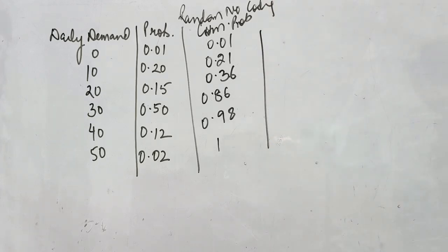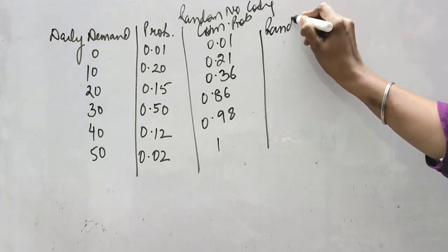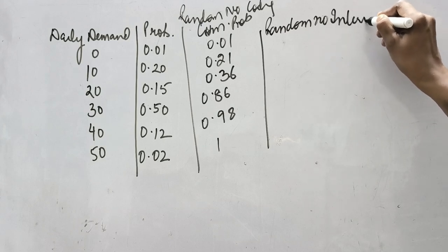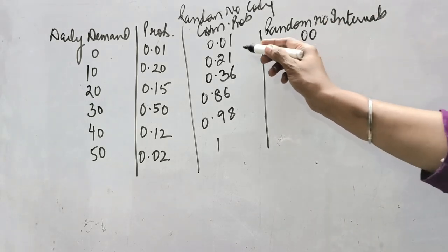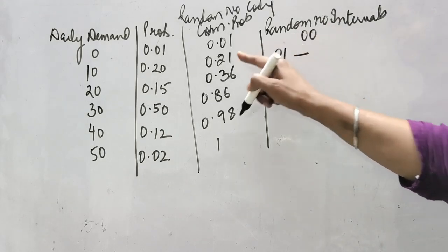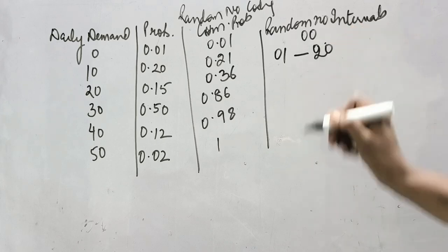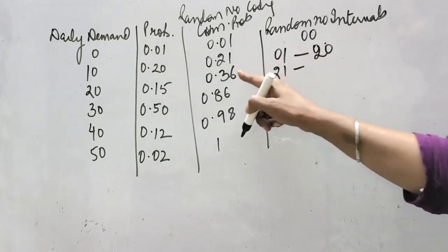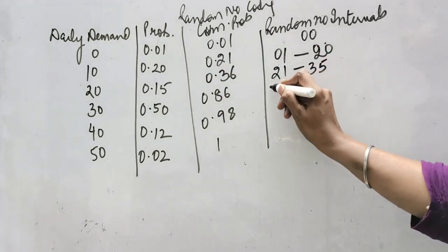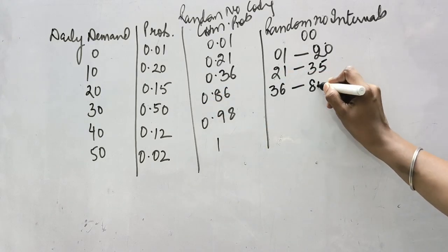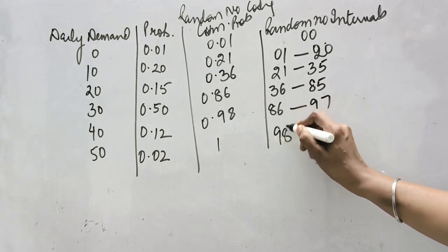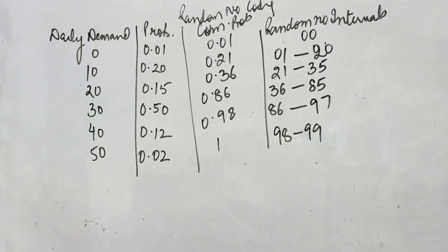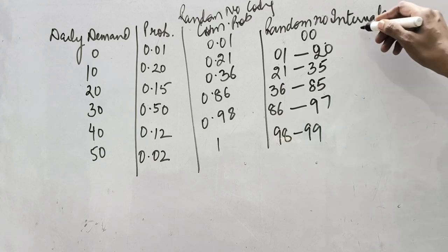From these cumulative probabilities, we will design the random number intervals — the ranges within which the random numbers will lie. You always start with 00. The next random number starts from 01 and goes up to one less than the next value, so 20. Next starts from 21, goes to 35. Next: 36 to 85. Next: 86 to 97. Next starts at 98 and if the value is 100, take it as 99. This is how random number intervals are generated based on cumulative probabilities.